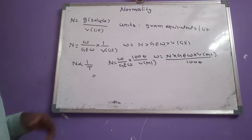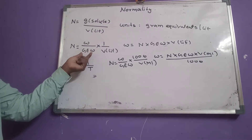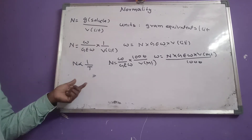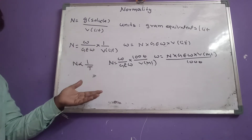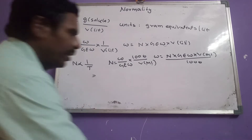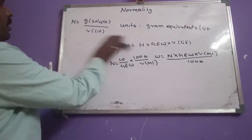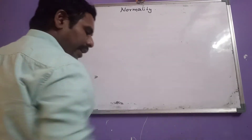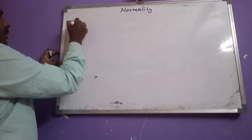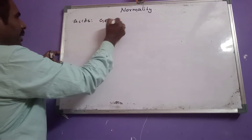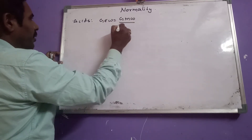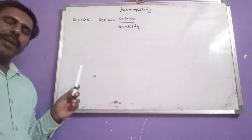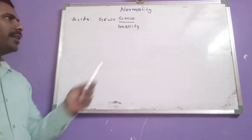Now we need to learn about gram equivalent weight. After knowing gram equivalent weight, we can solve problems related to normality. For acids, gram equivalent weight is calculated using the formula: gram molecular weight divided by basicity. Basicity is the number of replaceable H⁺ ions present in one molecule of an acid.